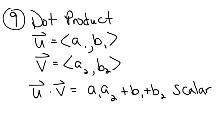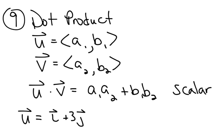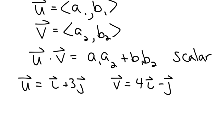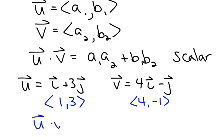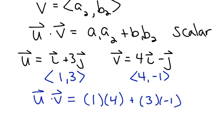Another thing we learned about vectors was the dot product. If vector u is (a1, b1) and vector v is (a2, b2), then u dot v is the product of the horizontal components plus the product of the vertical components, and the answer is a scalar quantity. For example, if u is i plus 3j and v is 4i minus j — in component form, (1, 3) and (4, negative 1) — the dot product is 1 times 4 plus 3 times negative 1, which is 4 plus negative 3, equal to 1.